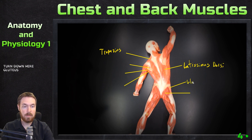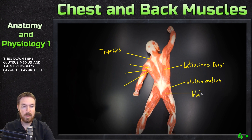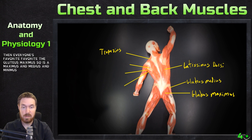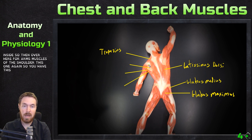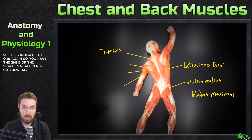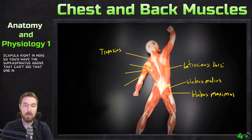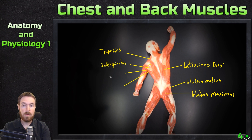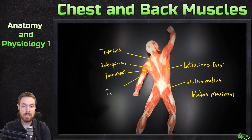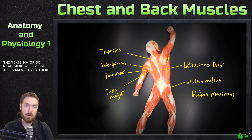Down here we have the gluteus medius and then everyone's favorite, the gluteus maximus. There's a maximus, a medius, and a minimus deep down inside. Over here for the arm, the muscles of the shoulder — you'd have the spine of the scapula right in here, so you'd have the supraspinatus above that, which we can't see here, but this one is the infraspinatus. Then this is the teres minor, and then this one is the teres major.